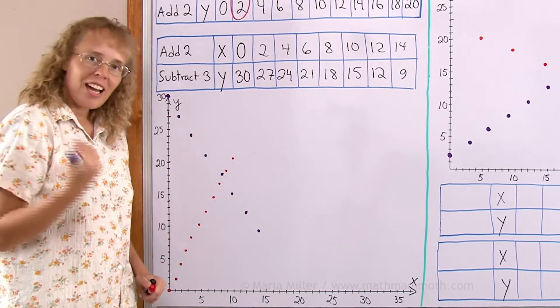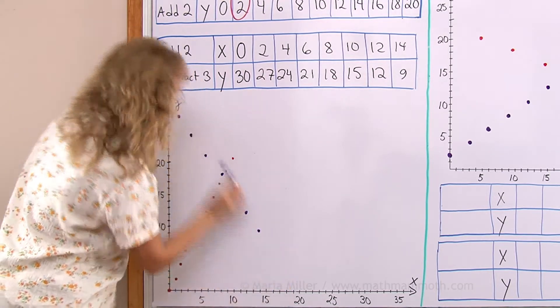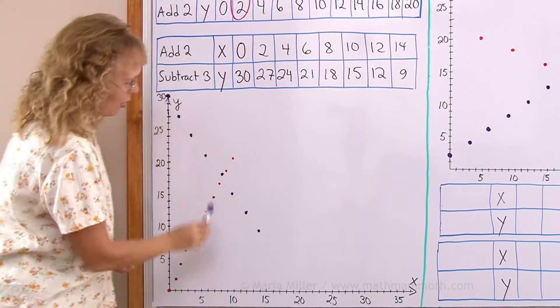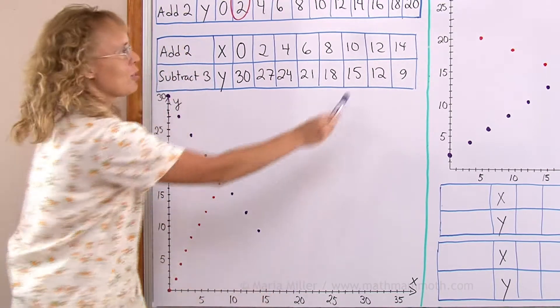Now my plotting is not totally accurate because I don't have the grid lines here. But you can see they are again on a line and I could continue it over here like this and I could continue it that way too.